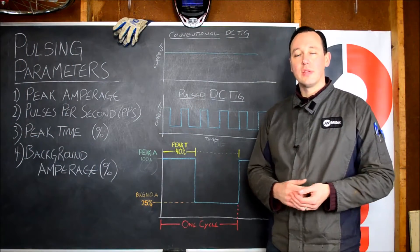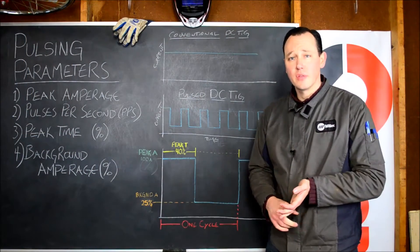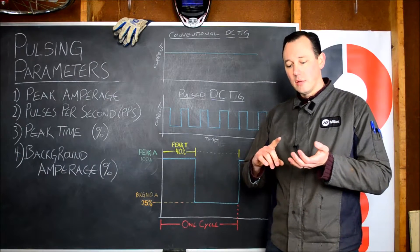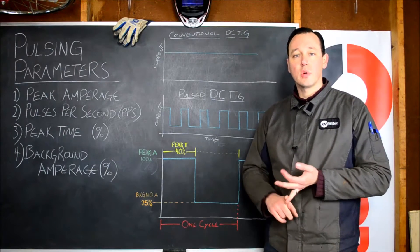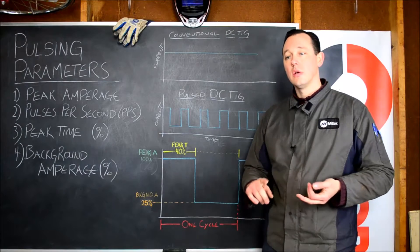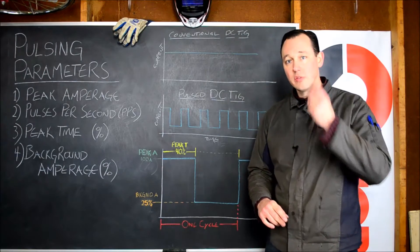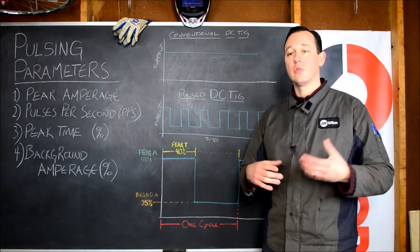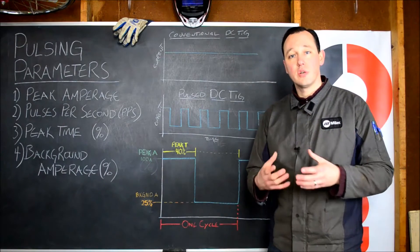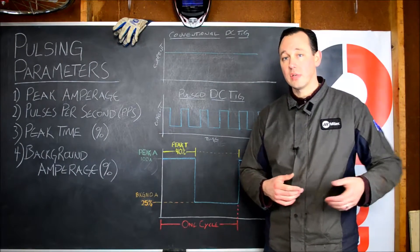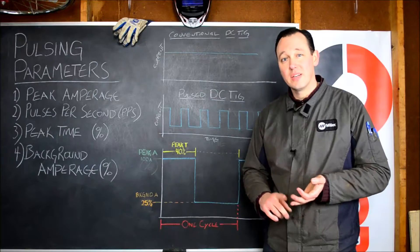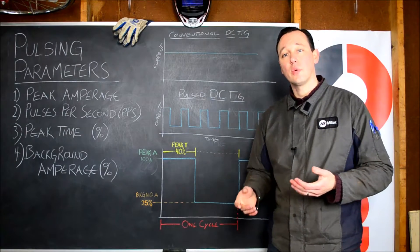Pulsing is a very valuable asset to a TIG welder because it does a number of things for us. Number one, it reduces heat input, which is critical in minimizing distortion. Number two, at higher frequencies we see a narrowing of the arc cone, which results in a concentration of our heat allowing us to travel faster. We also see an increase in arc stability and directional control at higher frequencies.